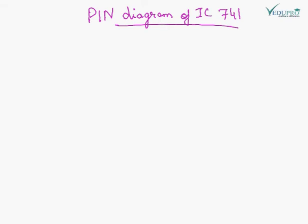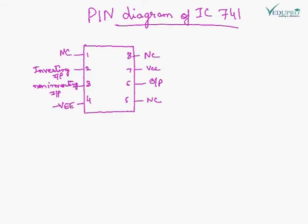Now we will see the pin diagram of IC741. This is the pin diagram of IC741. This is pin number 1 which is not connected anywhere. But for some frequency adjustment and to set the offset voltage we use pin number 1 and pin number 5. But generally it is not connected.